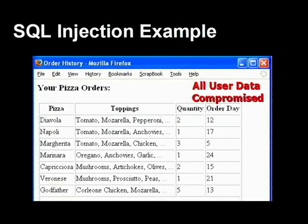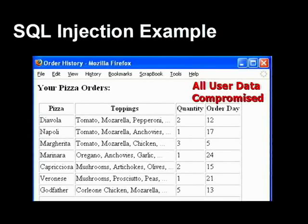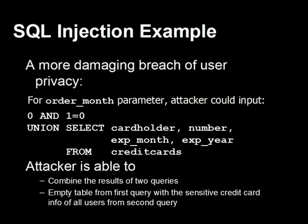For pizzas this might not be a big deal, but imagine if this was a medical database — now you have everybody's medical records. More relevant to stealing money: the attacker could instead type in input like '0 and 1=0 union select cardholder, number, expiration_month, expiration_year from credit_cards'. The '0 and 1=0' evaluates to nothing, and then those nothing results get unioned with results from the credit cards table.